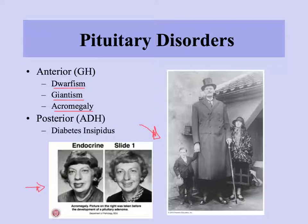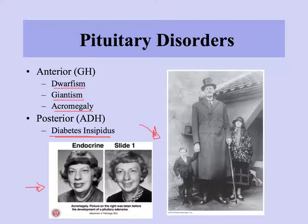Another pituitary hormone disorder is diabetes insipidus, which is not the same as the common diabetes mellitus. Both share the symptom of wanting to drink a lot and having high urine output. In diabetes mellitus, high blood sugar triggers this behavior. In diabetes insipidus, there is an imbalance in antidiuretic hormone, so too much water is retained in the urine instead of being reabsorbed by the kidneys.